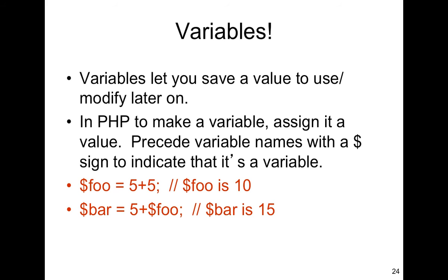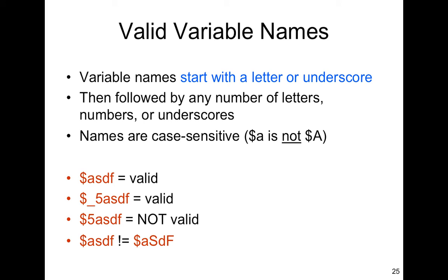Variables in PHP always start with a dollar sign. So $foo is equal to 5+5, which means foo equals 10. Then $bar is equal to $foo plus 5, so bar equals 15. If you want to use a variable, you always start it with a dollar sign, and the variable name must start with a letter or underscore — it can't start with a number. The language is also case-sensitive, so it's very symbol-oriented with the dollar signs for variables and the question mark arrows for PHP tags.